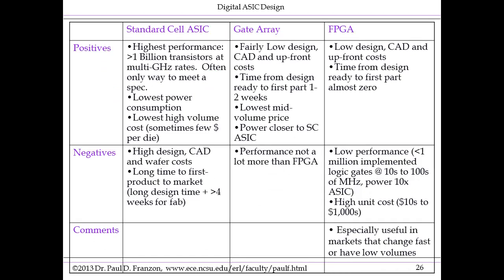This brings us to the pros and cons of these different implementation styles. Standard cell ASIC gives you the highest performance and the lowest power consumption. You can have hundreds of millions of logic gates — up to billions in generations just coming up — operating at multi-GHz rates, though half to one GHz is the most common clock speed.